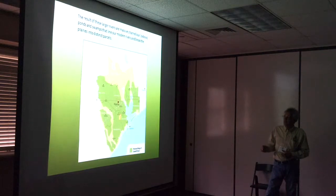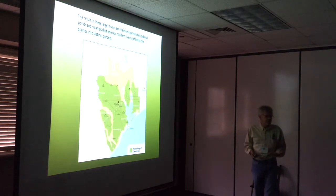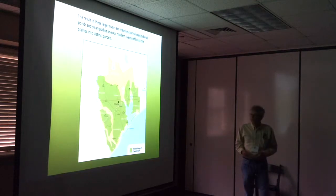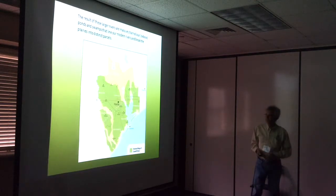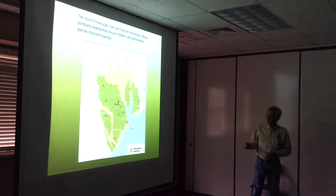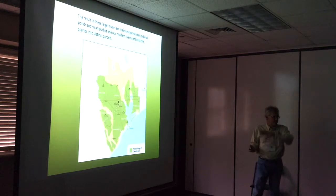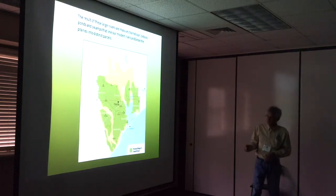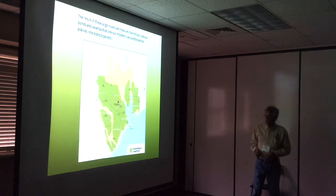These prairies are separated by the modern river valleys, which have different sediment and hydrology, and for the most part are forested. Prairie vegetation occurs on the older Pleistocene sediments — the stuff from the last ice age and older — versus the stuff that's 10,000 years old or less, which is forested.